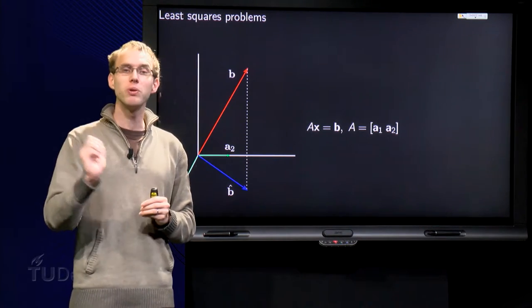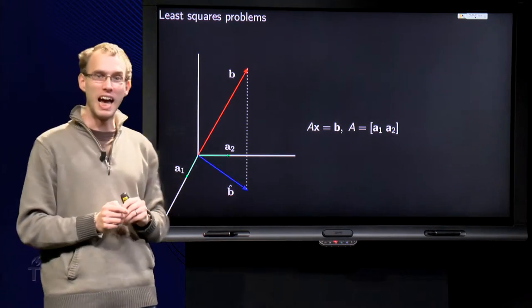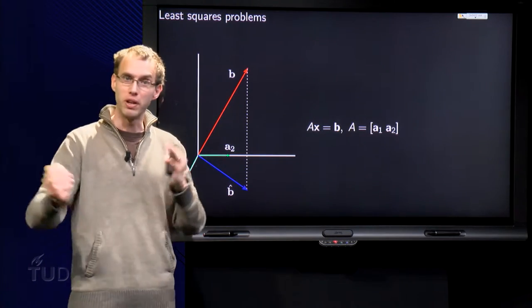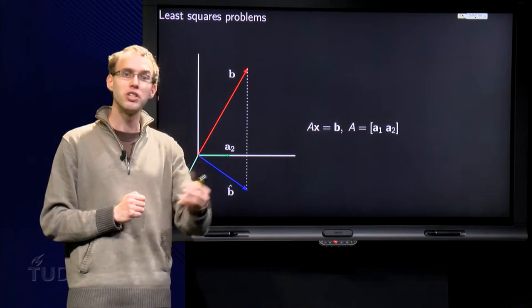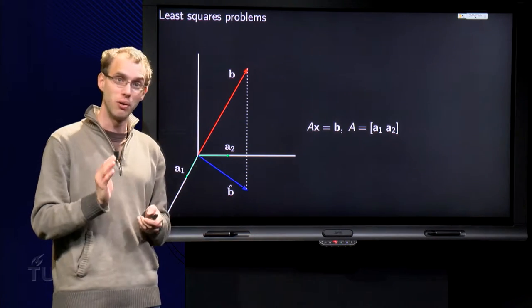What we will do is, instead of AX = b, we will compute b̂, the projection of b on the span of a₁ and a₂, and the new system AX = b̂ will be consistent. That is the idea.